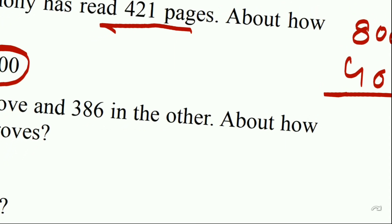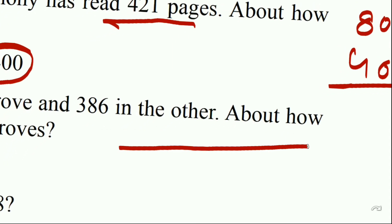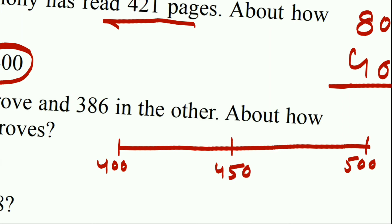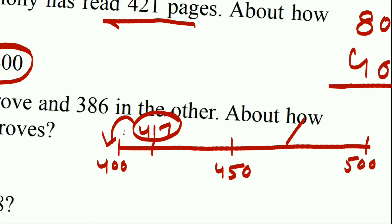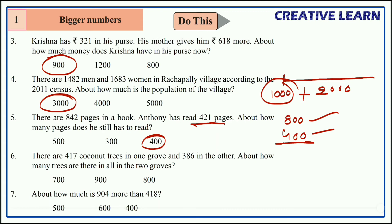For 417: the range is 400 to 500, with the middle number being 450. Now 417 comes before 450, so it is clear that 417 is nearer to 400. We can take 417 as 400.